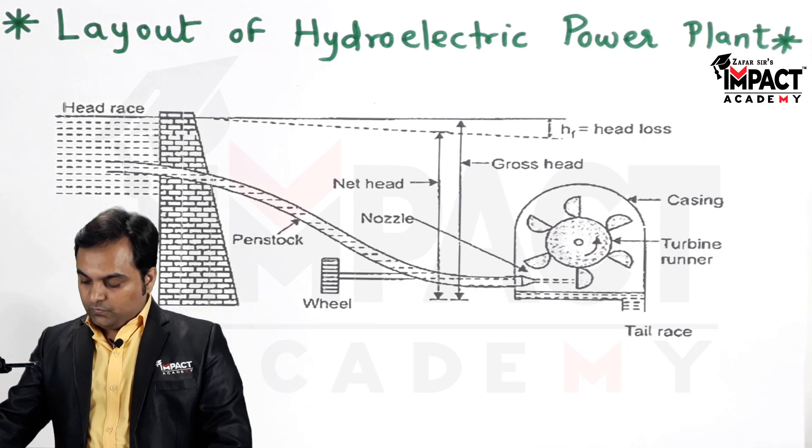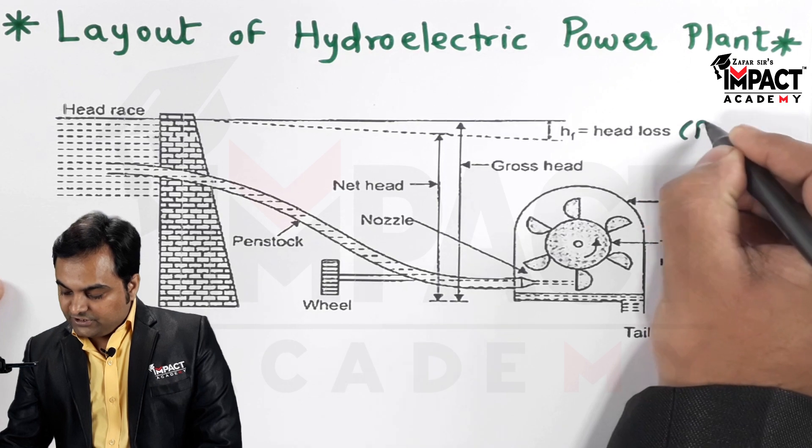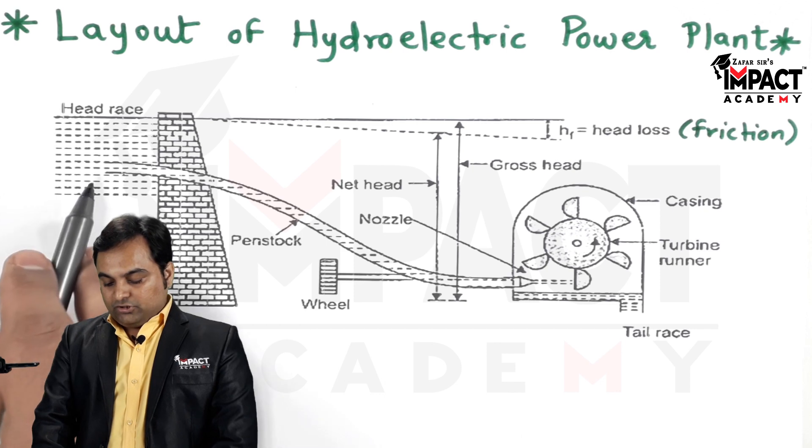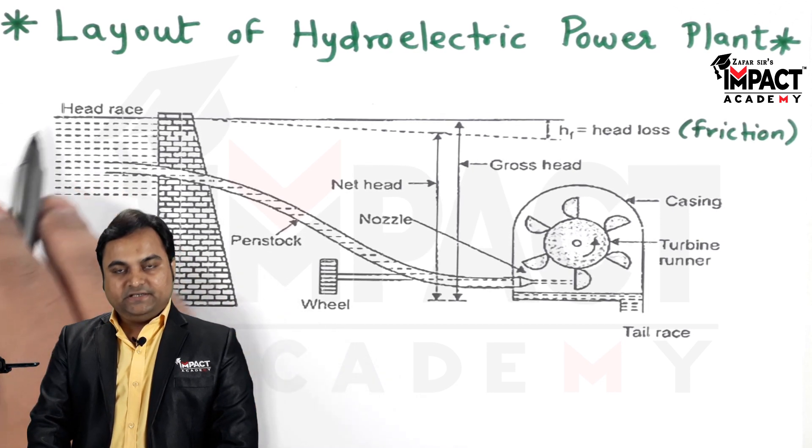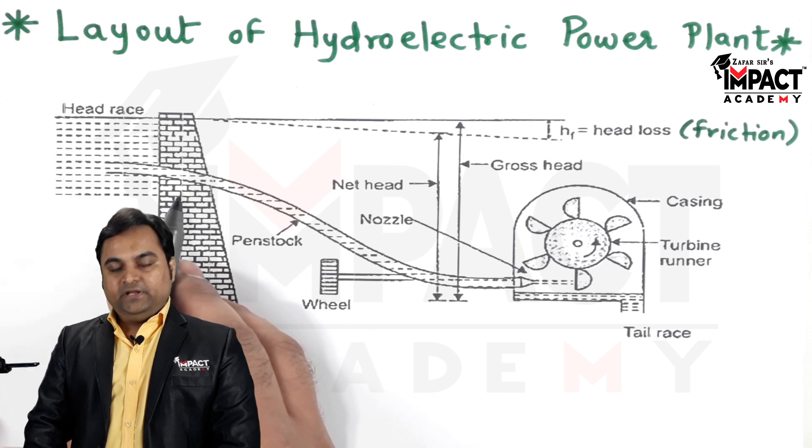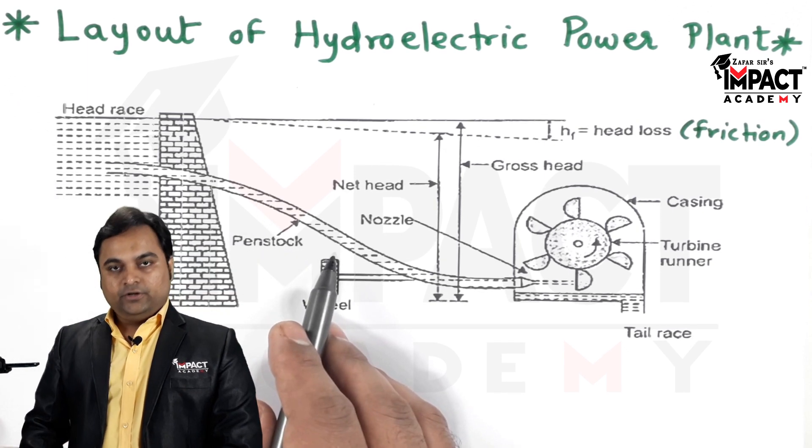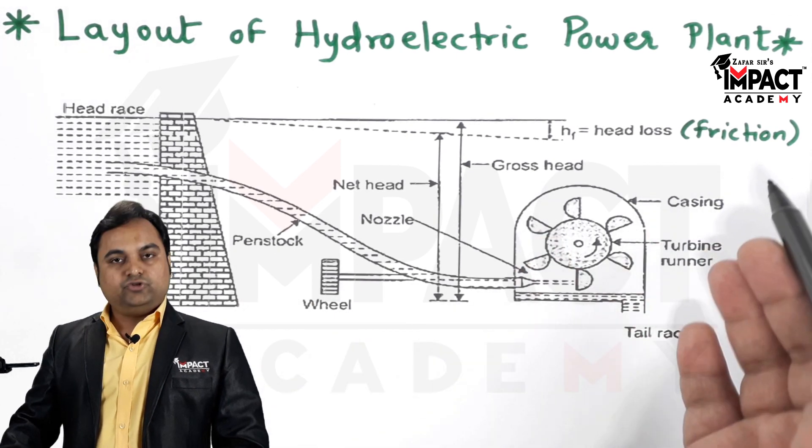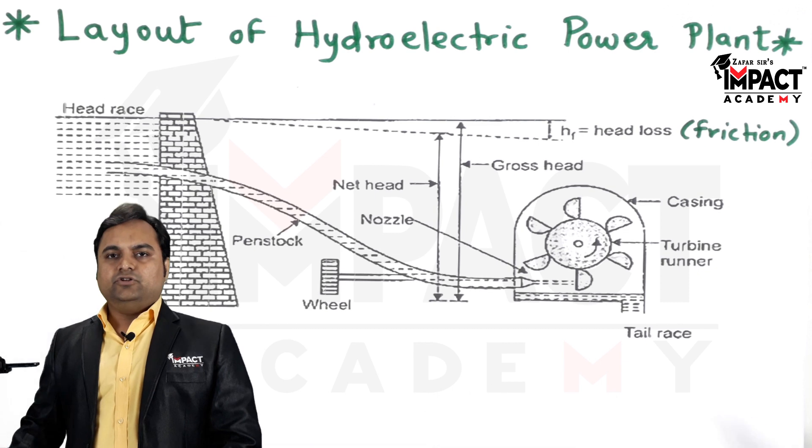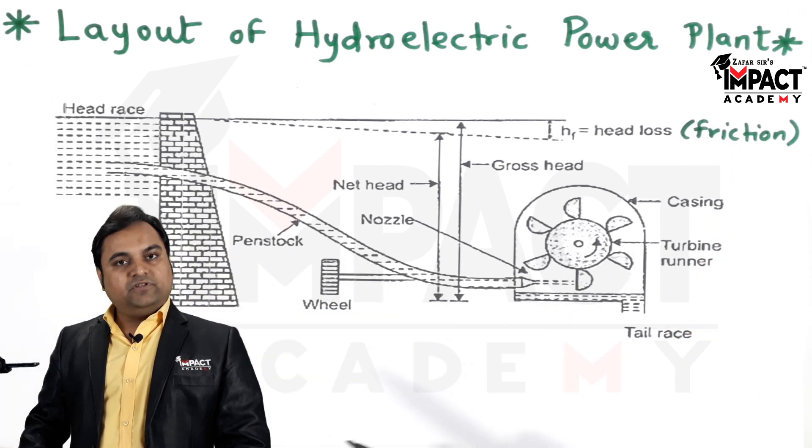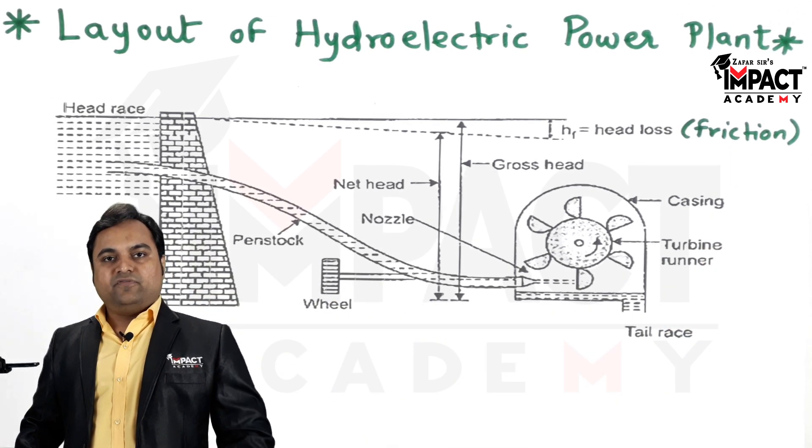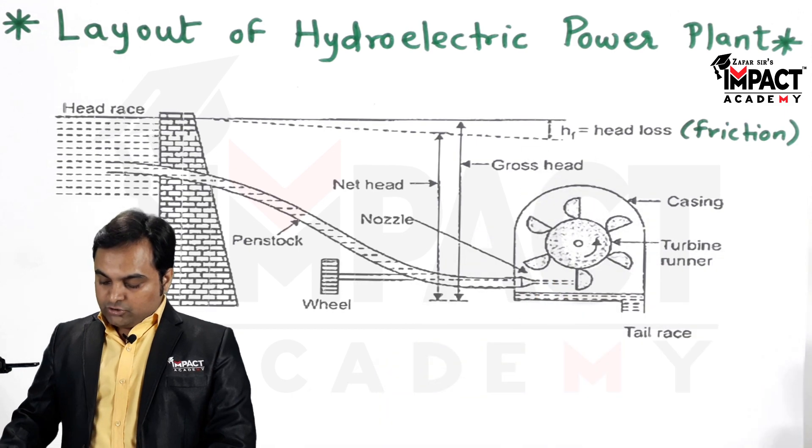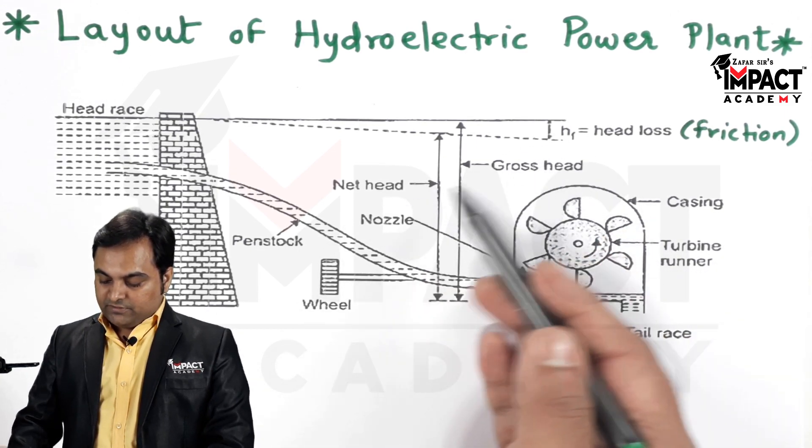So it means when the water passes from the dam or the head race through the penstock, there will be the head loss due to friction due to the length of the pipe. The more is the length of the pipe, the more would be the head loss due to friction, and the head loss due to friction also depends upon the material of the pipe. So more amount of roughness, more amount of friction would be there and net head will go on decreasing. So here we can see there is some loss in the head.